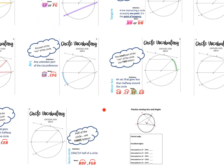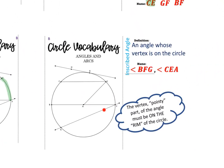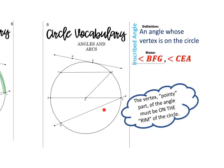Now let's talk about inscribed angles. We've talked about central angles, where the vertex is the center. An inscribed angle is an angle whose vertex is on the circle. Angle BFG is inscribed because F is the vertex and that's on the circle. CEA is also considered inscribed because the vertex is on the circle. So BFG is considered an inscribed angle.